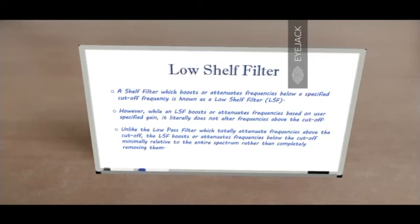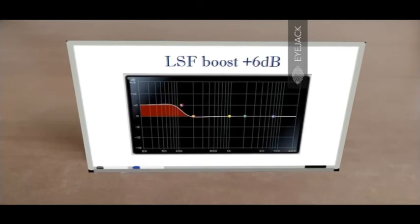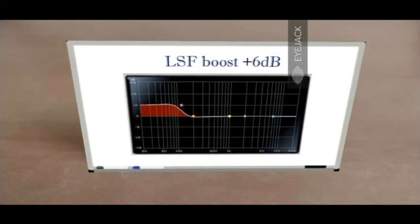The degree to which the boost or attenuation is applied is totally up to the user, who can choose high attenuation, high gain, low attenuation, or low gain. This is an example of an LSF boost with 6 decibel gain. The user can choose two things: the amount of gain — in this example, 6 dB — and the cutoff frequency below which the LSF functions and beyond which there is no change. From approximately below 100 Hz, there is a boost with 6 dB gain, and everything beyond 100 Hz is just flat, untouched, at zero gain.